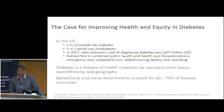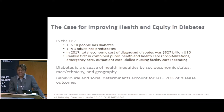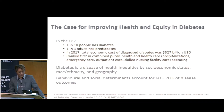In the U.S., one in 10 people has diabetes. And importantly, one in every three adults has prediabetes. People with prediabetes are likely to develop type 2 diabetes within the next one to five years — it's imminent. In 2017, the total economic costs of diagnosed diabetes in the U.S. was $327 billion — that's an annual cost.